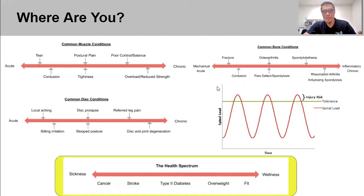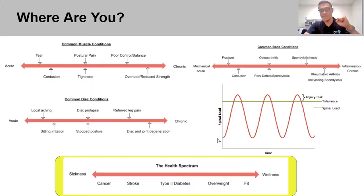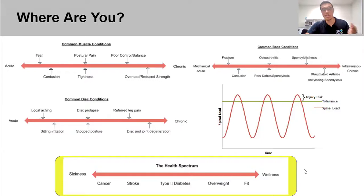Bringing this all together: where are you on your muscle spectrum, your bone spectrum, and your disc spectrum? For each structure, the load-versus-tolerance graph interacts with the others. An acute muscle injury with minor disc and bone issues requires very different advice to an older individual with multiple significant conditions. Back pain is usually not one problem — it's typically three or four problems intermixed, possibly layered on top of a chronic disease like type 2 diabetes.